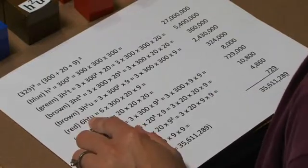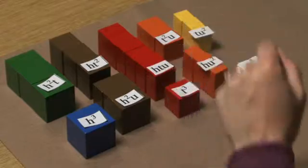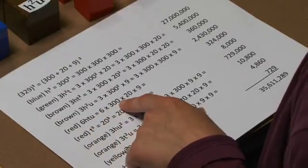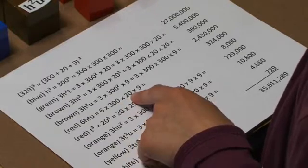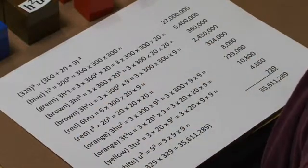We would continue on with our soldiers. They would be 100 times 10 times unit. And we had 6 of those. So it would be 6 times 300 times 20 times 9. And our product would be 324,000.